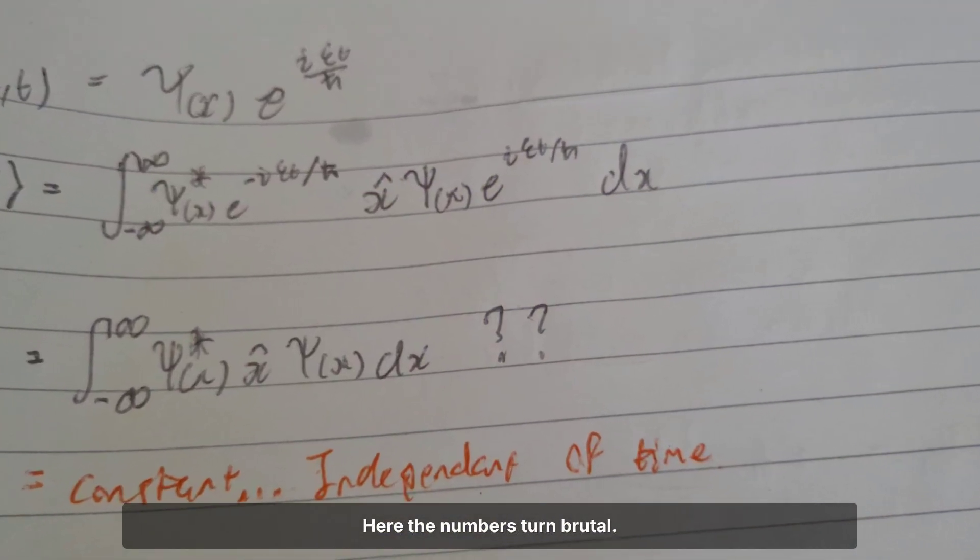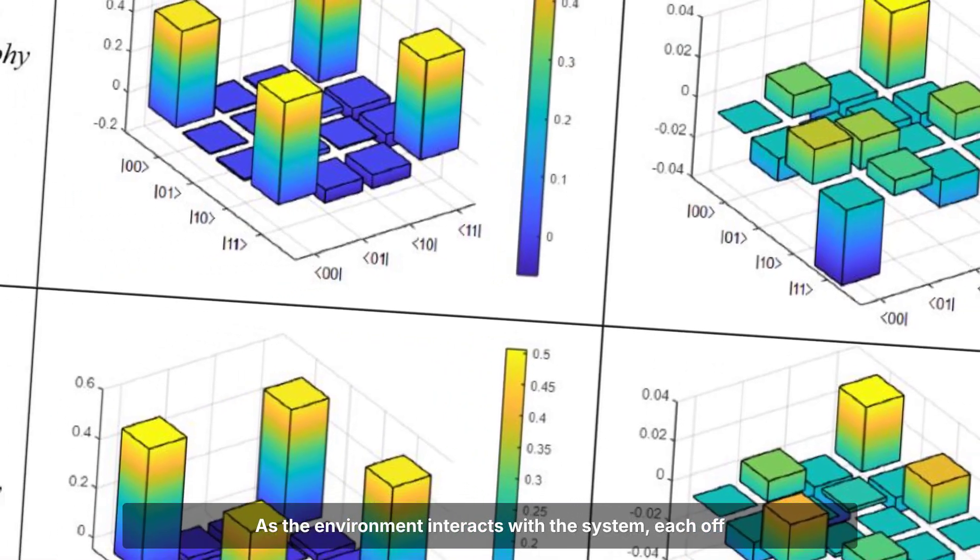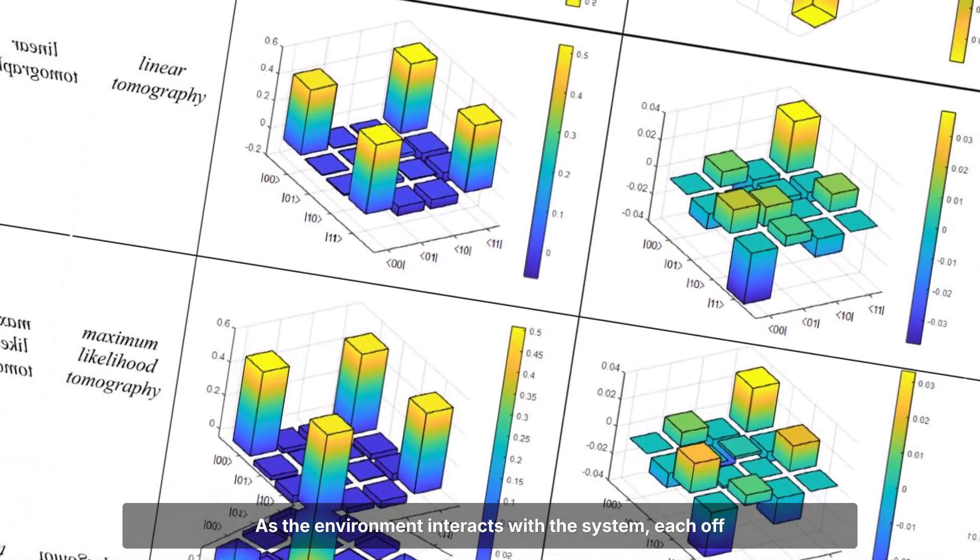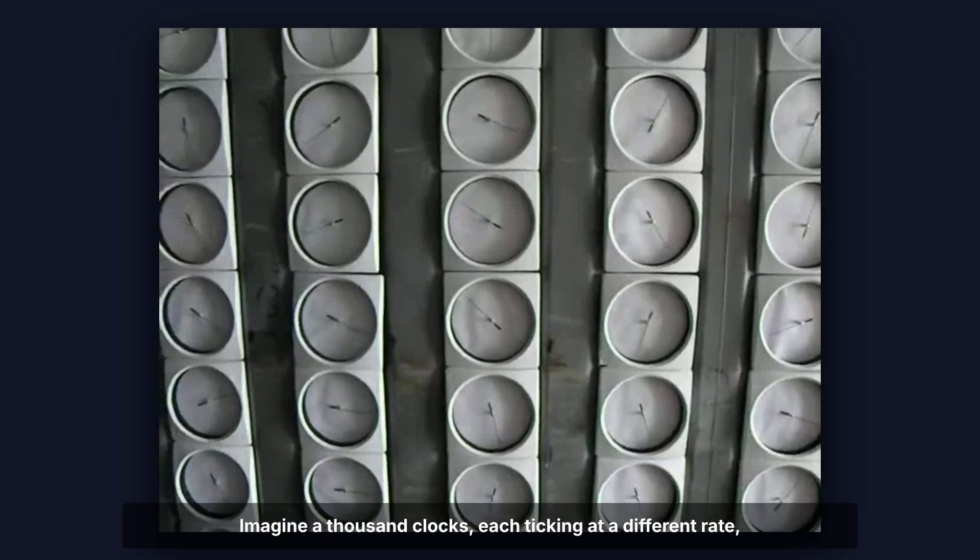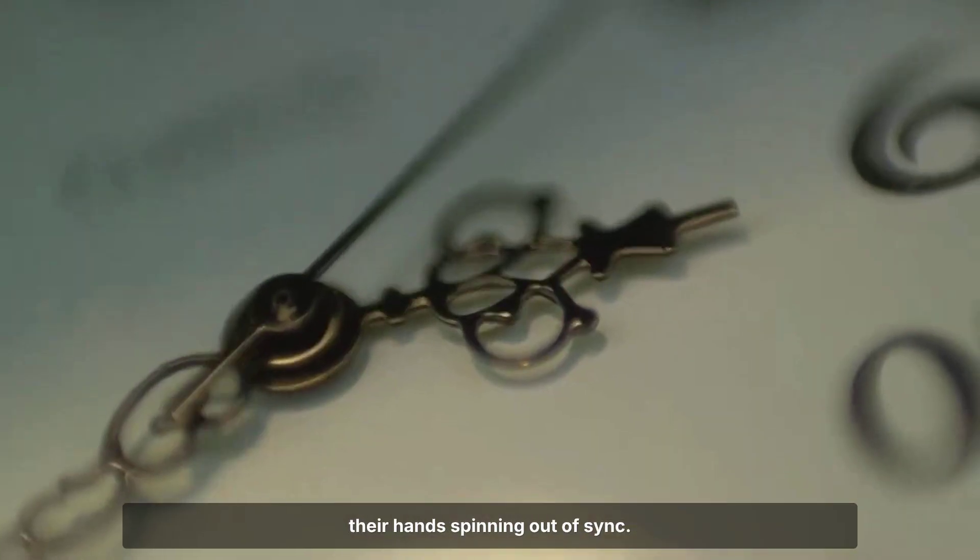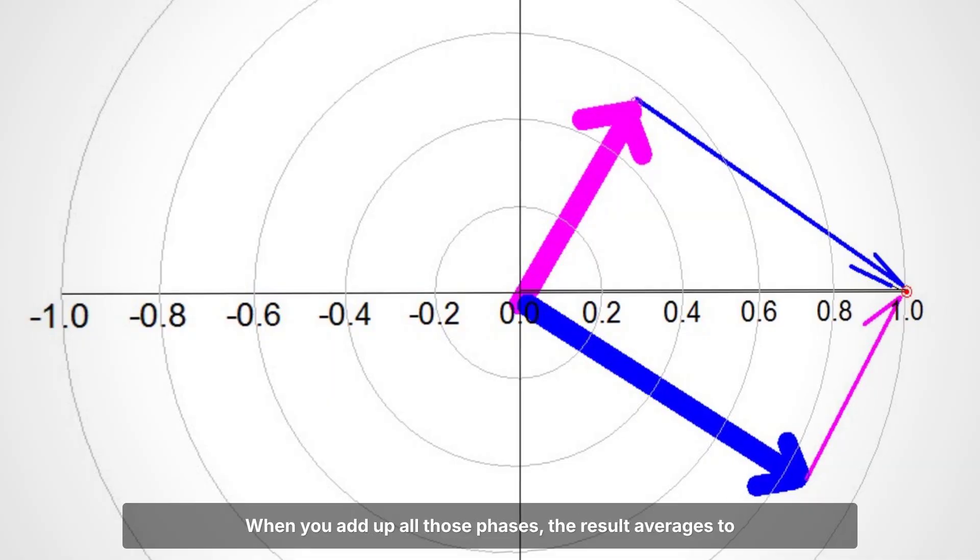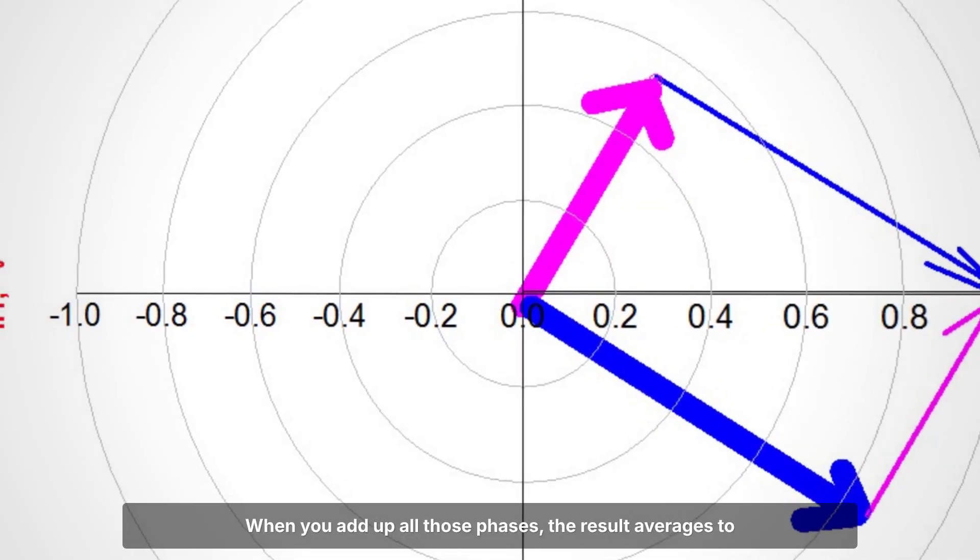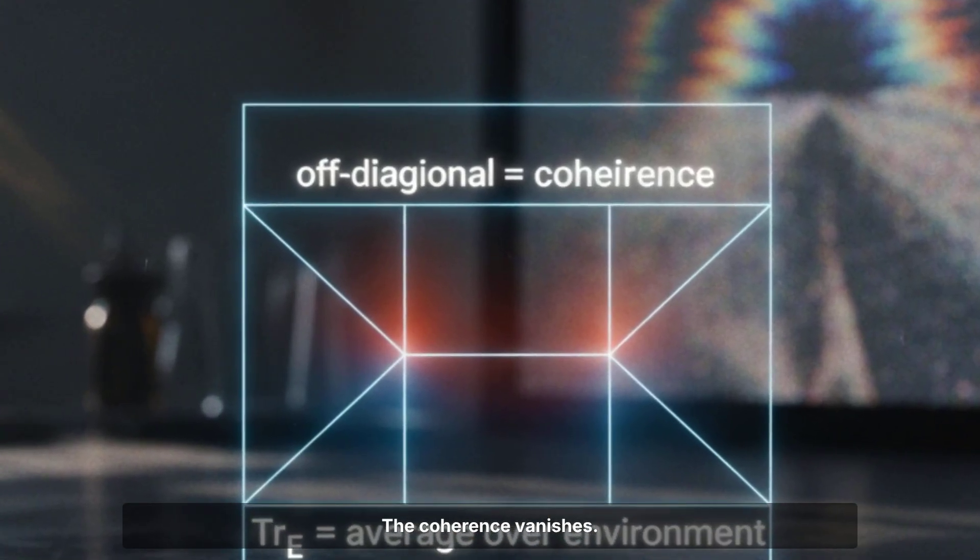Here, the numbers turn brutal as the environment interacts with the system. Each off-diagonal entry picks up a random phase. Imagine a thousand clocks, each ticking at a different rate, their hands spinning out of sync. When you add up all those phases, the result averages to zero. The coherence vanishes.